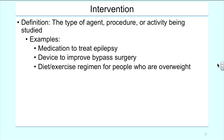Interventions are the type of agent, procedure, or activity being studied. The agent could be a drug, a device, or a biologic; or we could undergo an imaging procedure as part of the clinical trial. For example, interventions could include a medication to treat epilepsy, a new device to improve bypass surgery, or a diet or exercise regimen for people who are overweight.